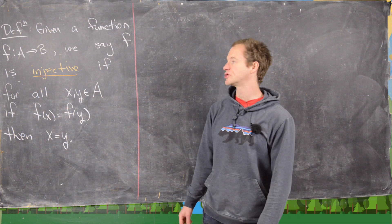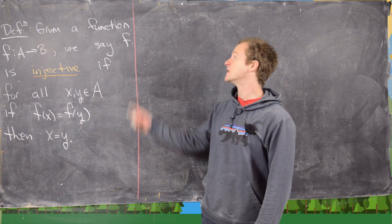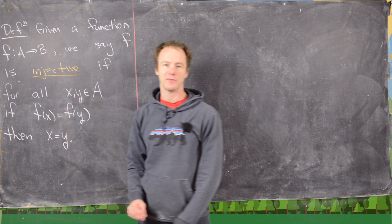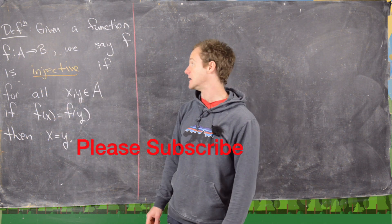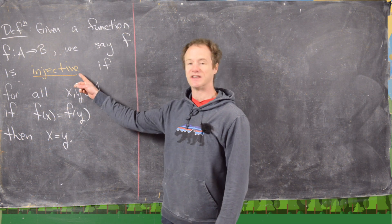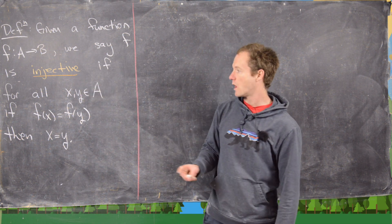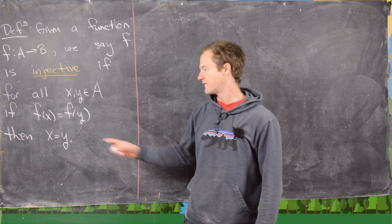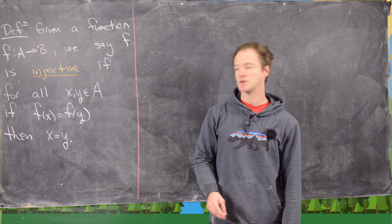Okay, in this video we're going to look at the notion of an injective function. So given a function f from A to B, so the domain is A and the codomain is B, we say f is injective or sometimes one-to-one if for all x, y in A, if f of x equals f of y, then x equals y.